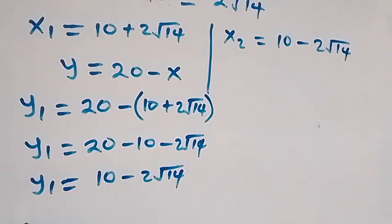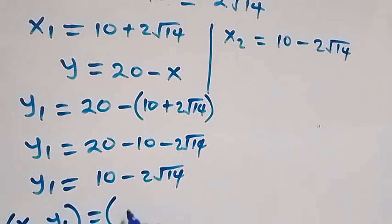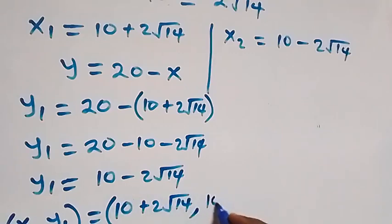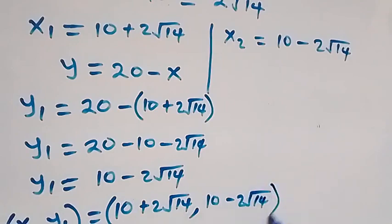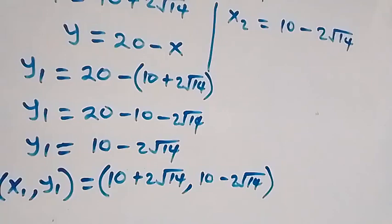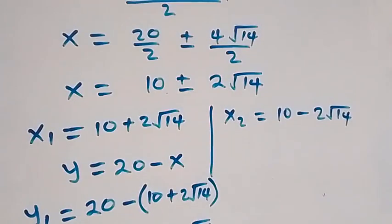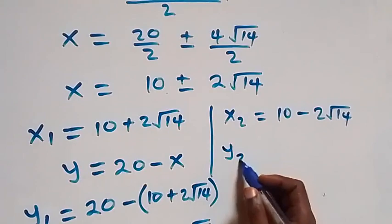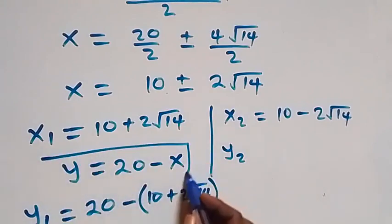So the first set of solutions x1 comma y1 is: x1 equals to 10 plus 2 root 14, and y1 equals to 10 minus 2 root 14. We also get the corresponding value of y2 using this same relation.